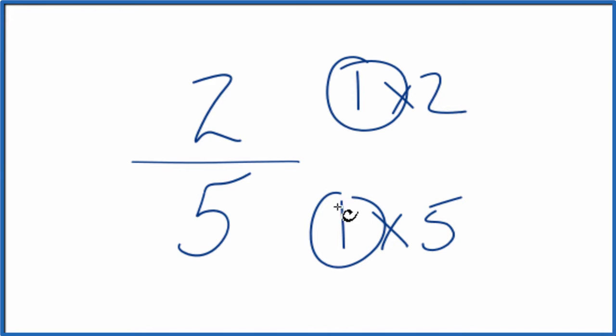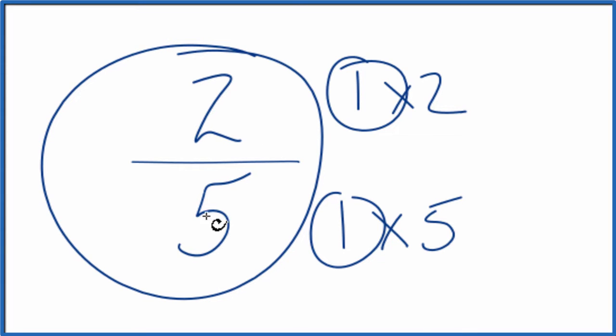Divide 2 by 1, we get 2. 5 divided by 1, that's 5. So we get that two-fifths, that's what we started with.